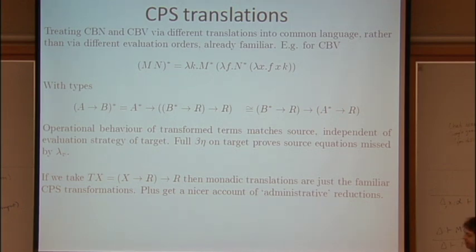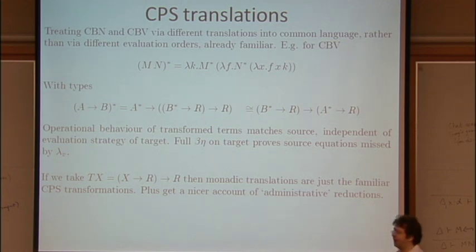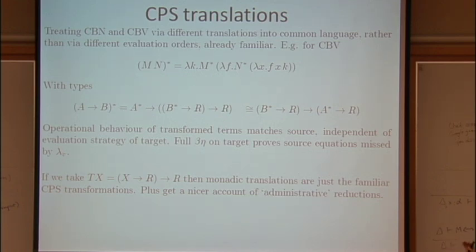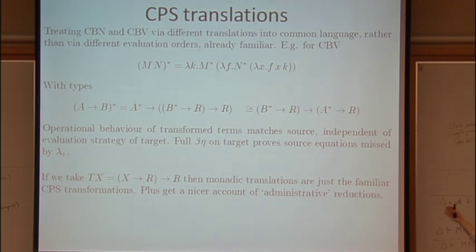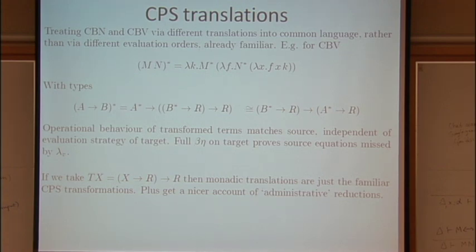Another nice thing is that this gives us a nicer account of what's called administrative reduction. If you do CPS transformation uniformly and compositionally, and there are lots of values in your source term, you end up with a transformed term with an enormous number of lambda abstractions and applications, many of which can be reduced immediately. Some of those redexes are due to a suboptimal CPS transformation, and some are redexes from your original programme. The older literature makes a fuss about tagging the lambdas — distinguishing lambdas from the original programme versus lambdas added by the CPS transformation. But here, in the monadic meta-language, we've actually got a different type constructor for those things. So beta and eta on T types give the administrative reductions, and these are separated by types from the reductions of the original programme.